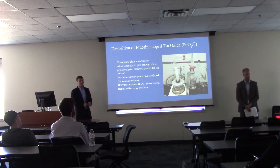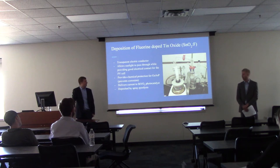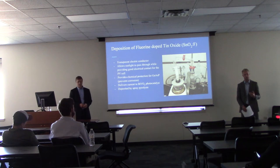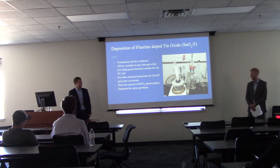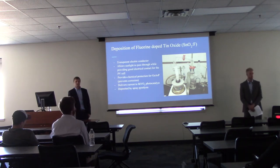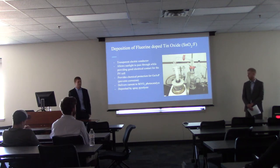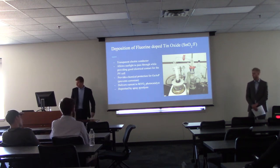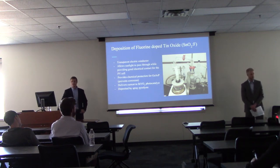The next step was deposition of the fluorine-doped tin oxide, which acted as the transparent electrical conductor for our artificial leaf. This allows sunlight to easily travel through the material and provides a good electrical contact for the PV cell. It was essential for our water splitting process and also provides chemical protection for the gallium arsenide phosphide — preventing arsenic from corroding into the water supply. It was applied using the same spray pyrolysis technique.